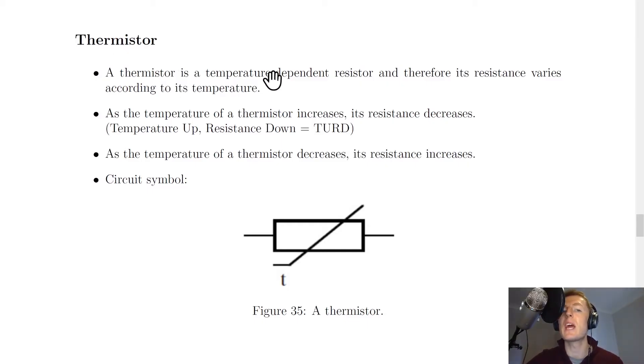So a thermistor is a temperature dependent resistor and therefore its resistance varies according to its temperature. And we have a rule for thermistors and this states that as the temperature of a thermistor increases, its resistance decreases. Or in other words, temperature up, resistance down.